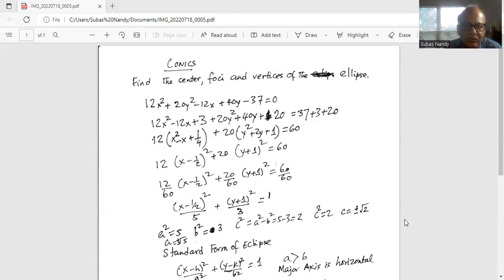So my a square is 5. My b square is 3. My c square is a square minus b square is equal to 5 minus 3 equal to 2. So c square equal to 2. So c is plus minus square root of 2.